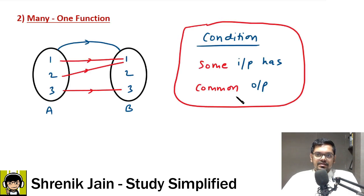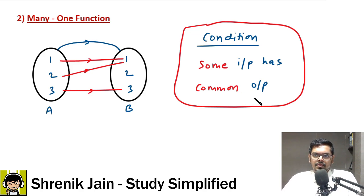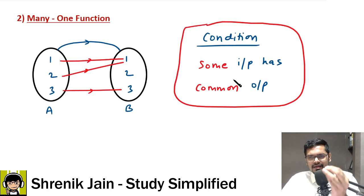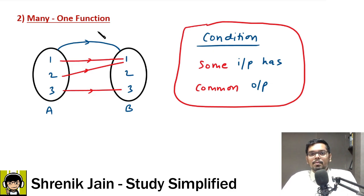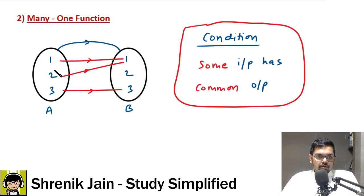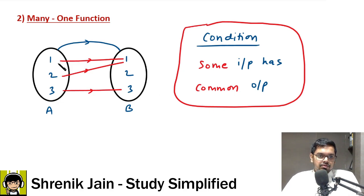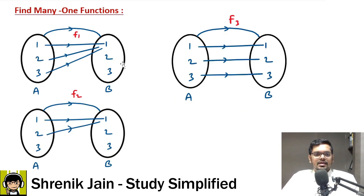Now the second type — many-one function. In simple terms: some inputs have a common output. Even if all inputs share one common output that is okay, but there should be at least some inputs giving a common output. If that is satisfied, we call it a many-one function. Here, inputs one and two are giving the same output, so some inputs give a common output — therefore it is a many-one function.